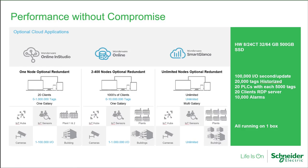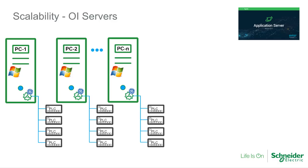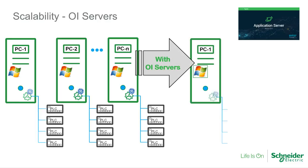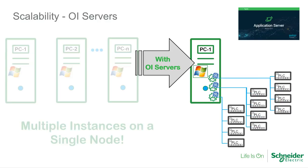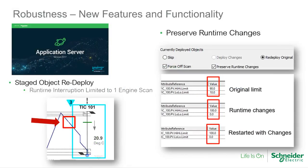Moving on to Wonderware's Application Server, a key feature delivered in 2017 is a significantly reduced runtime footprint, which allows an off-the-shelf PC to support 20 simultaneous RDP sessions running an application with up to 100,000 IO points. This provides customers with an immediate positive impact on their bottom line by reducing hardware and software licensing costs. Additionally, we've increased the scalability of users' connectivity solutions by enabling multiple instances of the same OI server to be run on a single machine, thereby reducing hardware and licensing costs even further.